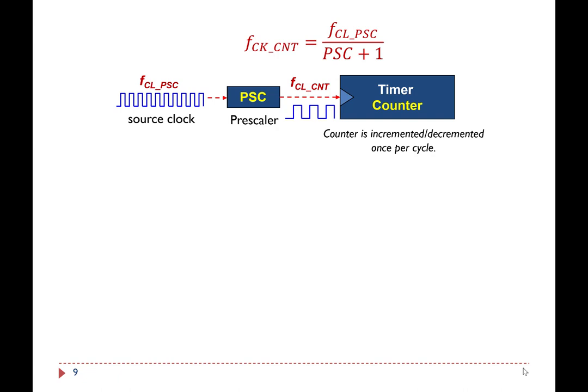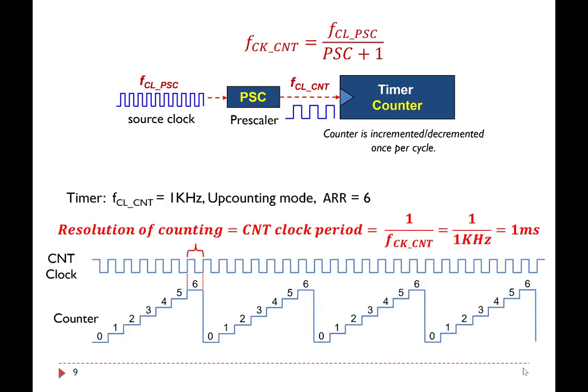For each cycle of the CNT clock, the counter is incremented or decremented by one depending on the timer count mode. For example, this diagram shows the counter clock and the counter values. If the counter clock is 1 kHz, then the time resolution of counting is 1 ms.